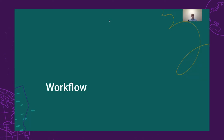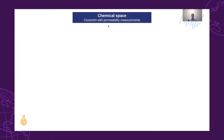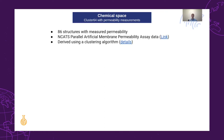In the rest of the presentation, I'm going to talk about the hypothetical compound design workflow. This workflow starts with a predefined chemical space, the so-called cluster 64. It is a small set of 86 structures with their associated permeability measurements. The dataset is derived from the PAMPA parallel artificial membrane permeability data using a clustering algorithm.